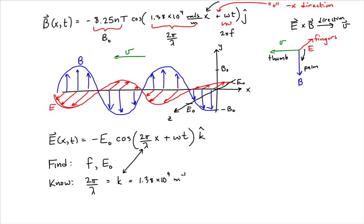So if we could find the frequency and the magnitude or the amplitude of the electric field, we will have then found everything we needed for our electric field function. So let's try and find the frequency. Well, we don't know the frequency, but we have an expression that allows us to find the wavelength of this wave.